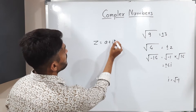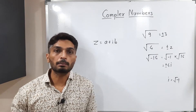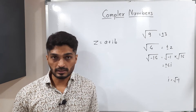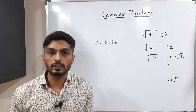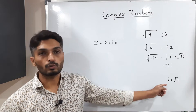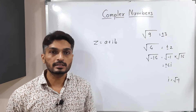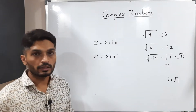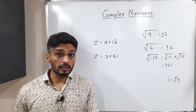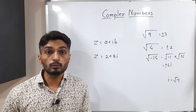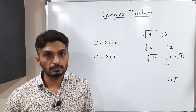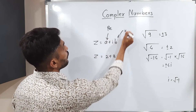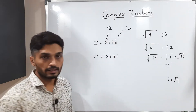A complex number is a number z equal to a plus ib, a number which can be expressed in this form. Here a and b are both real numbers, and i is the imaginary unit with value square root of minus 1. For example, z equal to 2 plus 3i — here 2 and 3 are both real numbers, but expressed as 2 plus 3i it is a complex number.